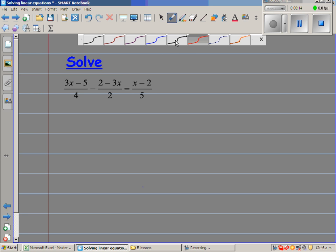When you have an equation like this, I would like to get rid of these denominators. To get rid of these denominators, I will first find the least common multiple of 2, 4, and 5.